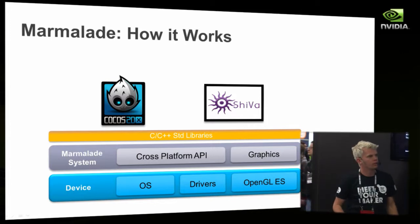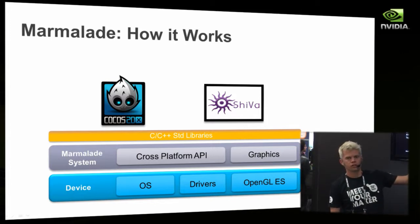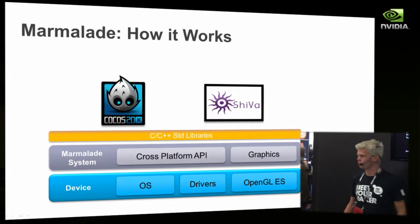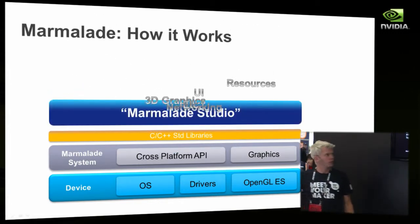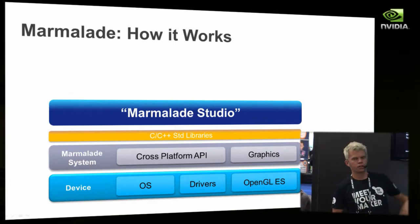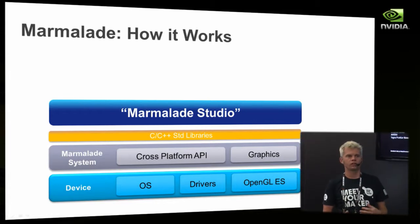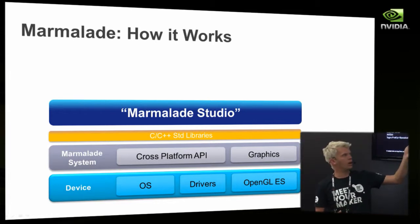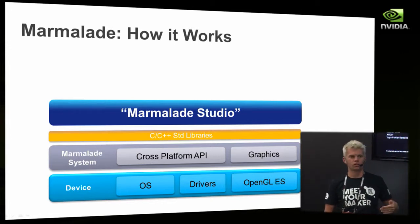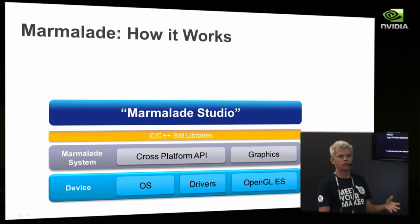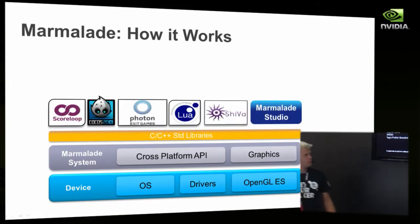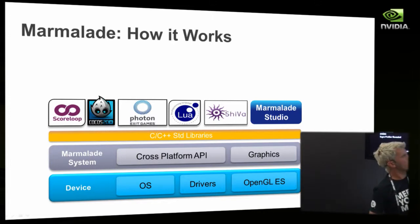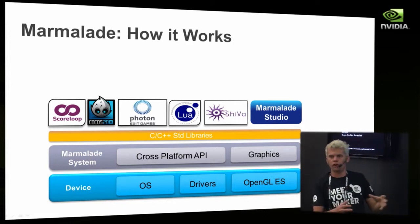We've also done integrations with higher-level 3D tools like Shiva 3D and Cocos2DX, which is the popular 2D game engine on iPhone. We also provide our own studio tools, which is 3D middleware for basic model manipulation and resource loading and management — that's completely optional. A lot of people go straight to the low-level C++ and OpenGL layer and bring across their existing engine. Everything above the abstraction layer is compiled to a single binary, then packaged with the system abstraction layer into the final binary that runs on the device.